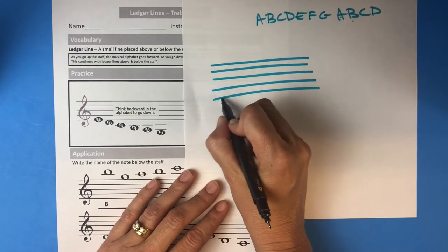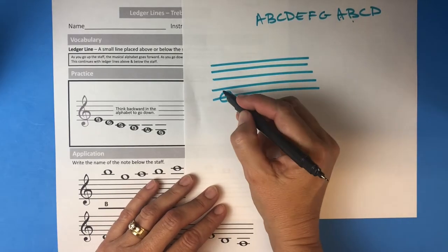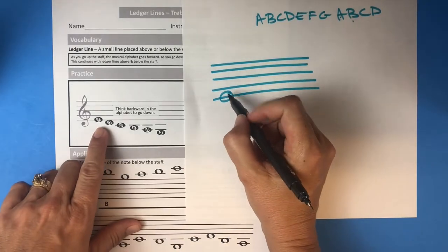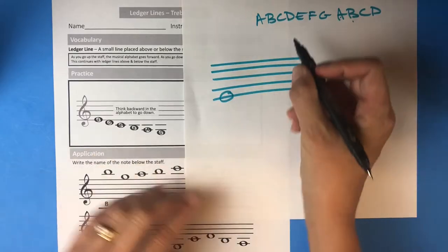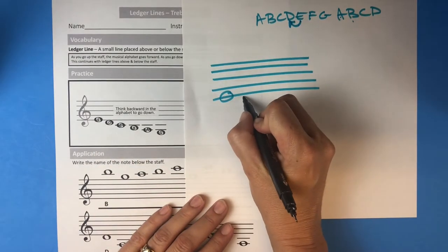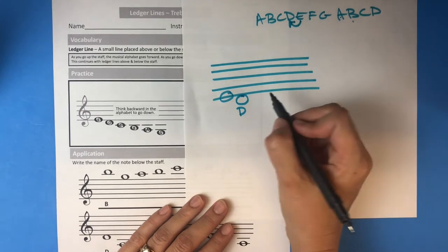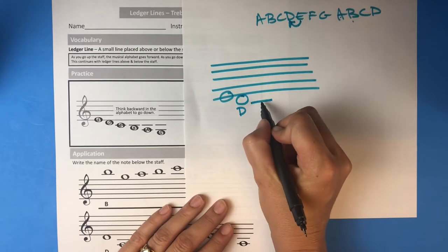We know that this bottom line is E - every good boy does fine, or Elvis's guitar broke down Friday. So this is an E. So the note below E, we're going to go backwards. Here's our E, we're going to go backwards in the musical alphabet, so that note right there is a D because we went backwards. Then we're out of room, so we've got to draw a ledger line and we put our note head on the line, so half above, half below.